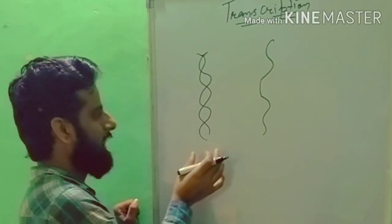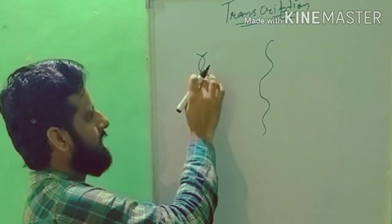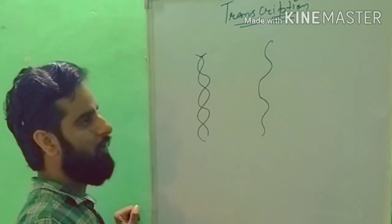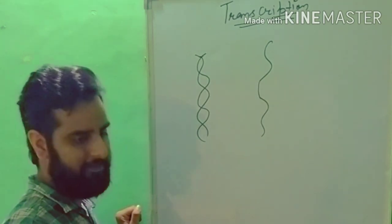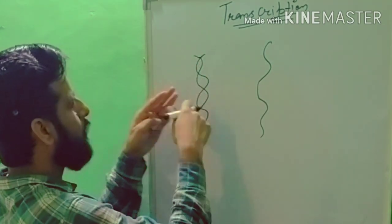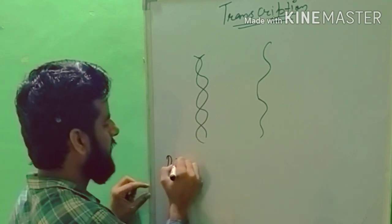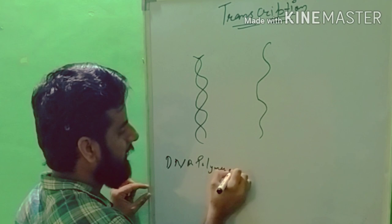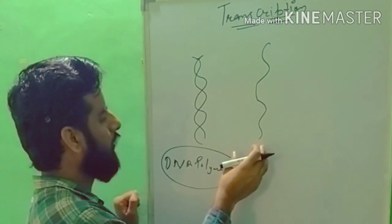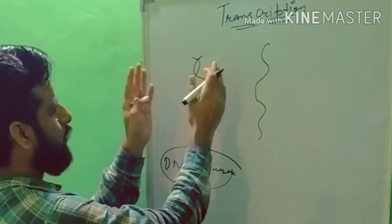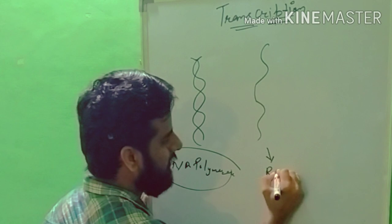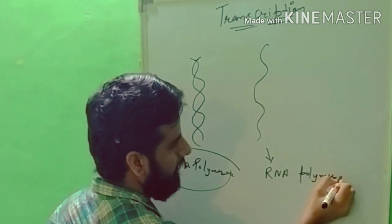In DNA replication, two strands participate in the replication process. But in transcription, only one strand will participate. In DNA replication, the enzyme used is DNA Polymerase. But in transcription, the enzyme used is RNA Polymerase, which opens the helix for transcription.